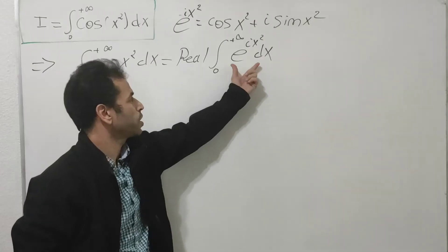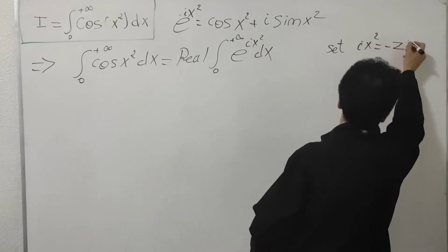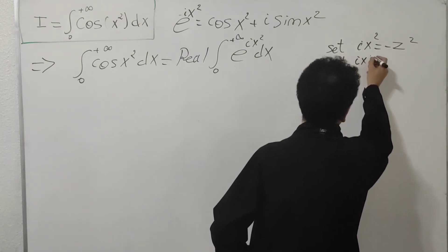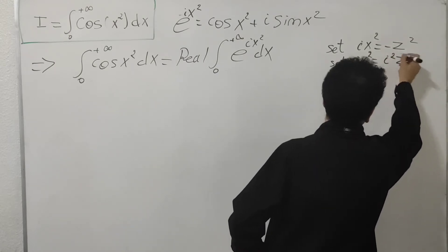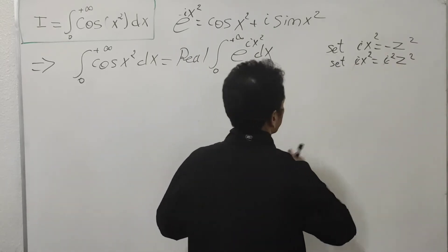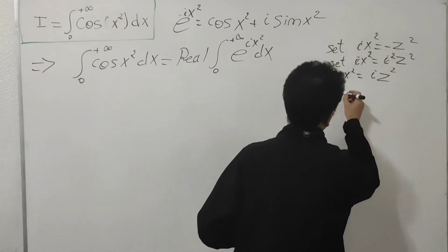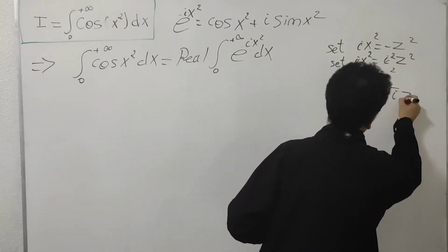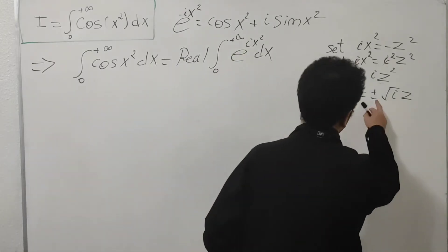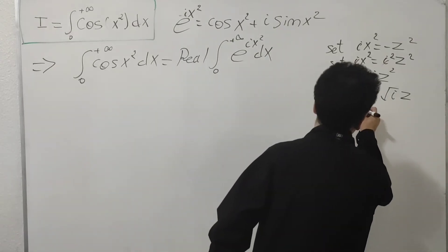Now I'm going to make a substitution. Let ix² = -z². Using complex numbers: ix² = i²z², and since -1 = i², cancelling one i from both sides gives x² = iz². Taking square roots: x = ±√(iz). Since x goes from zero to plus infinity we take the positive root, x = √(iz), so dx = √i dz.